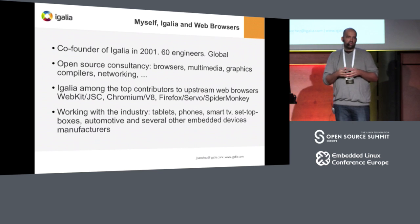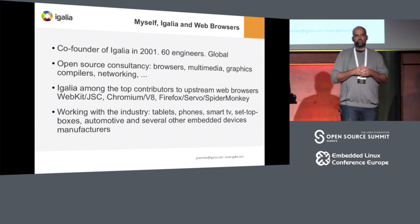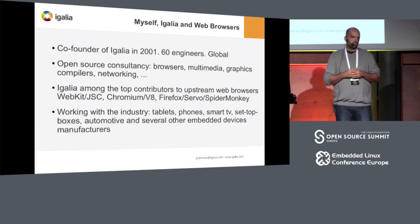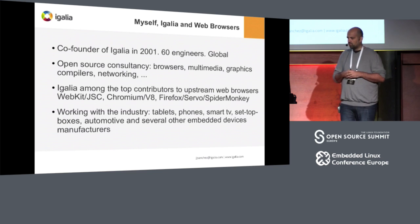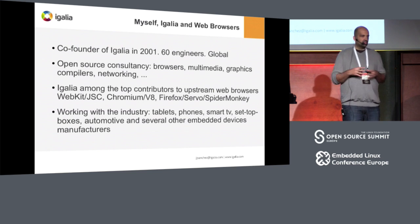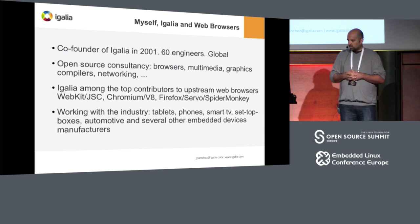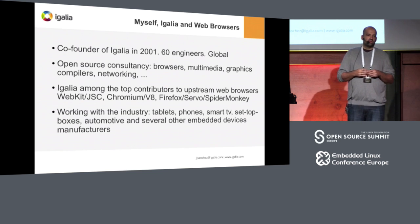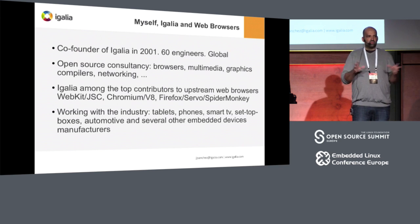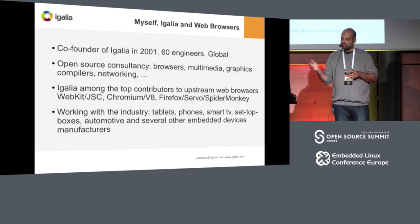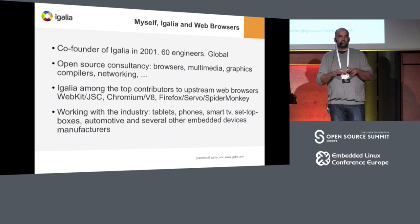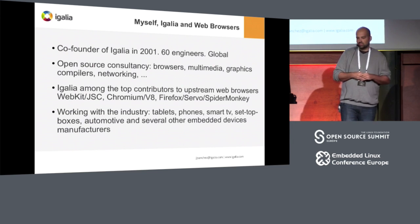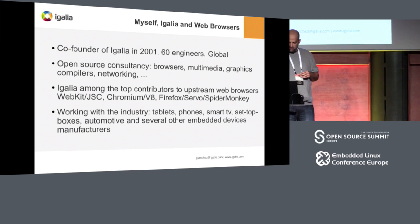Particularly in the case of browsers, Igalia has been during the last 10 years one of the top contributors to the main open source browser projects — for example, WebKit, Chromium or Firefox and all the components related to them. What we do is basically helping companies in industry which want to use these pieces of software in different kinds of devices — things like tablets, phones, smart TVs, automotive, or lately more and more kinds of embedded devices, which is what I'm going to mainly talk about today.